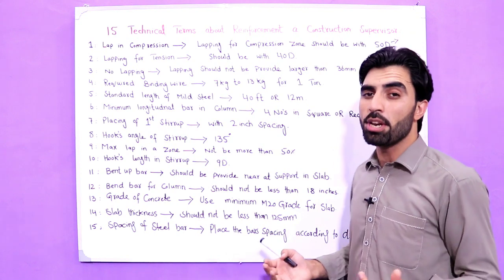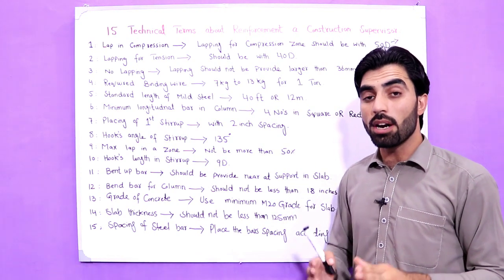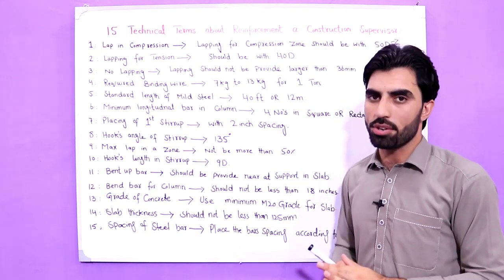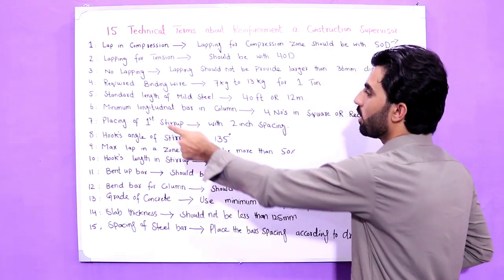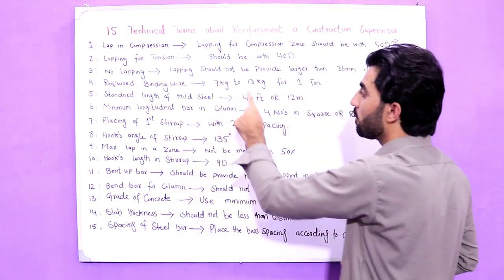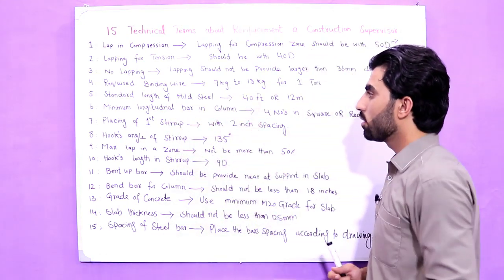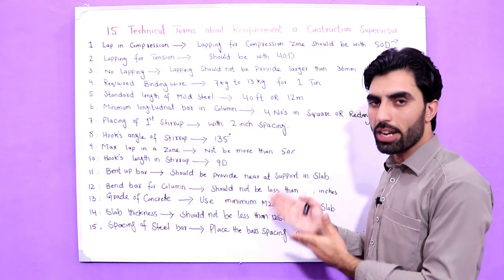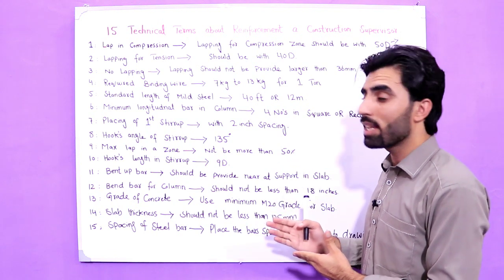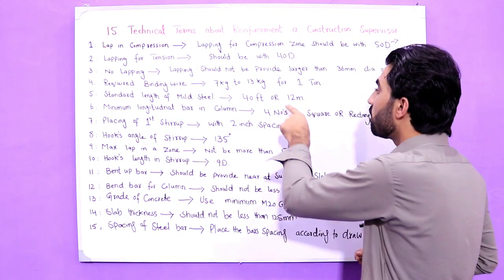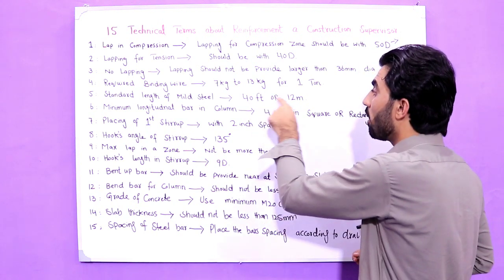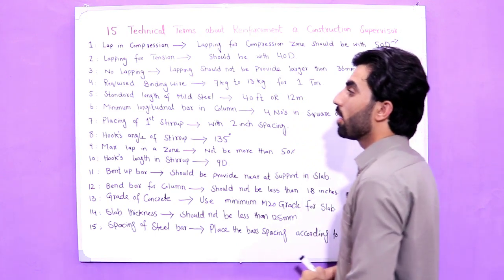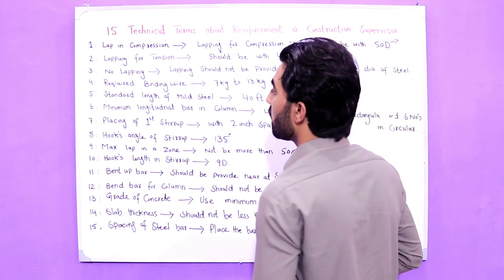The fifth term is the standard length of mild steel. The standard length of mild steel from the factory or industry is 40 feet, which is 12 meters.